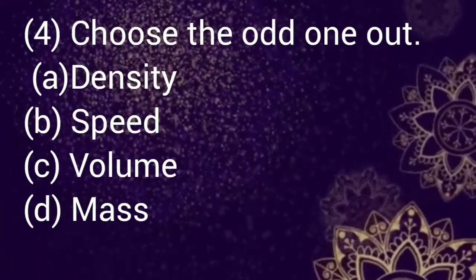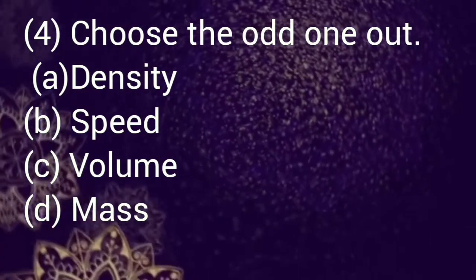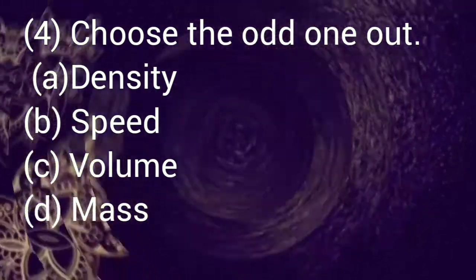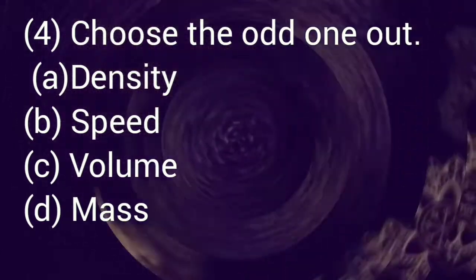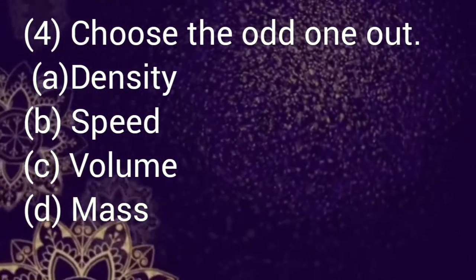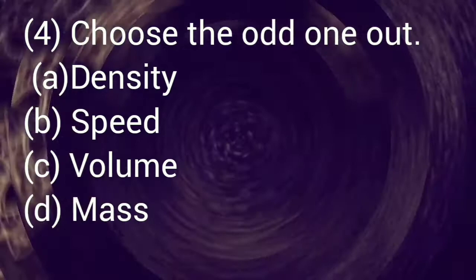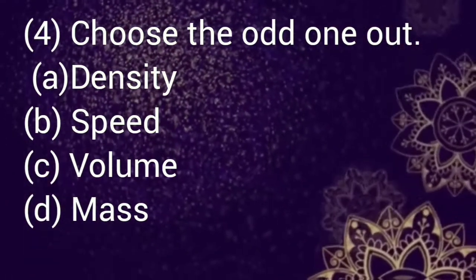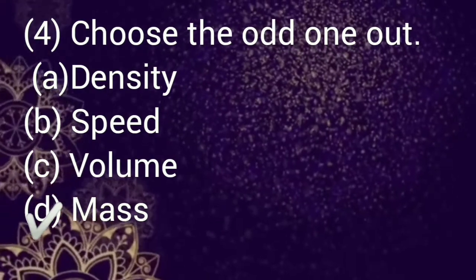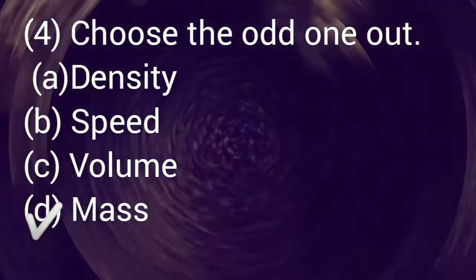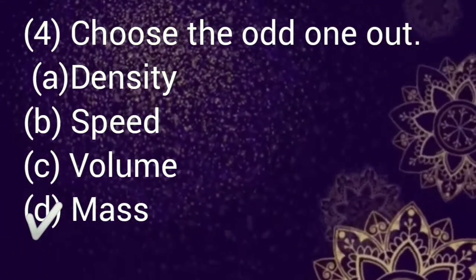Let us move on to question number four. Choose the odd one out: Option a: density, b: speed, c: volume, d: mass. Select your answer. Correct option is d, mass, as it is only a fundamental quantity. Rest all are derived quantities.